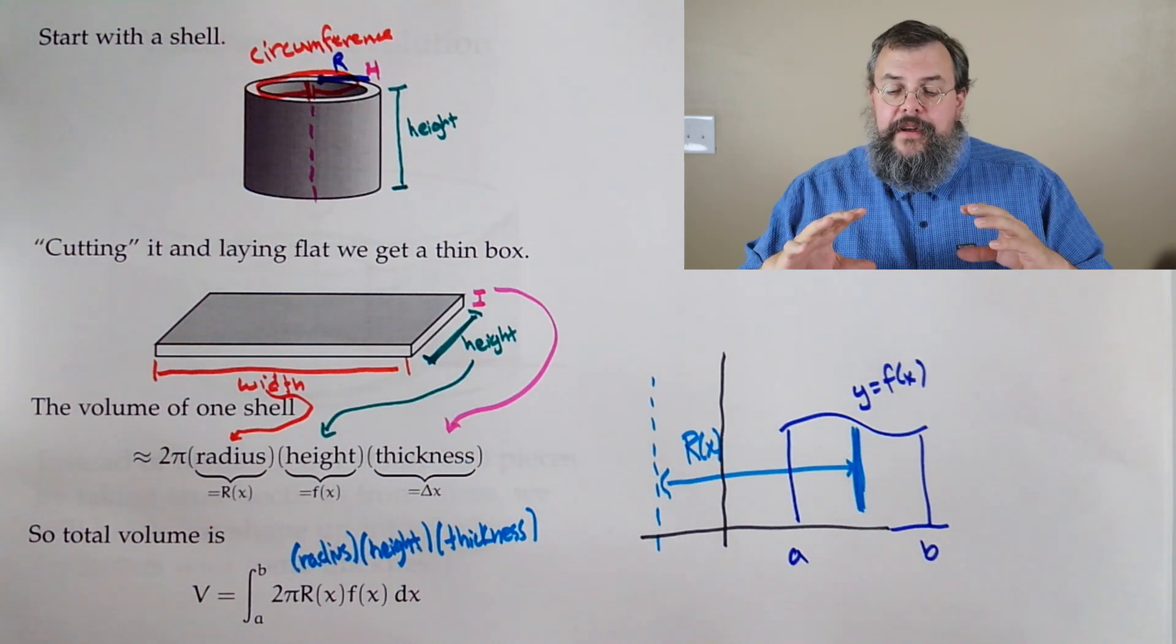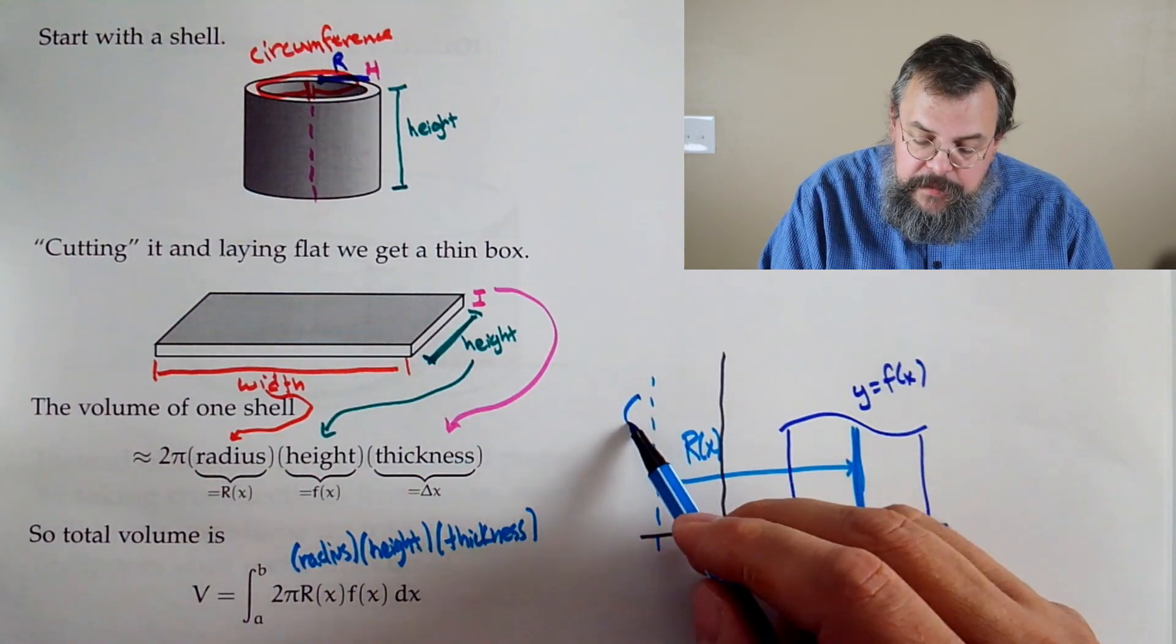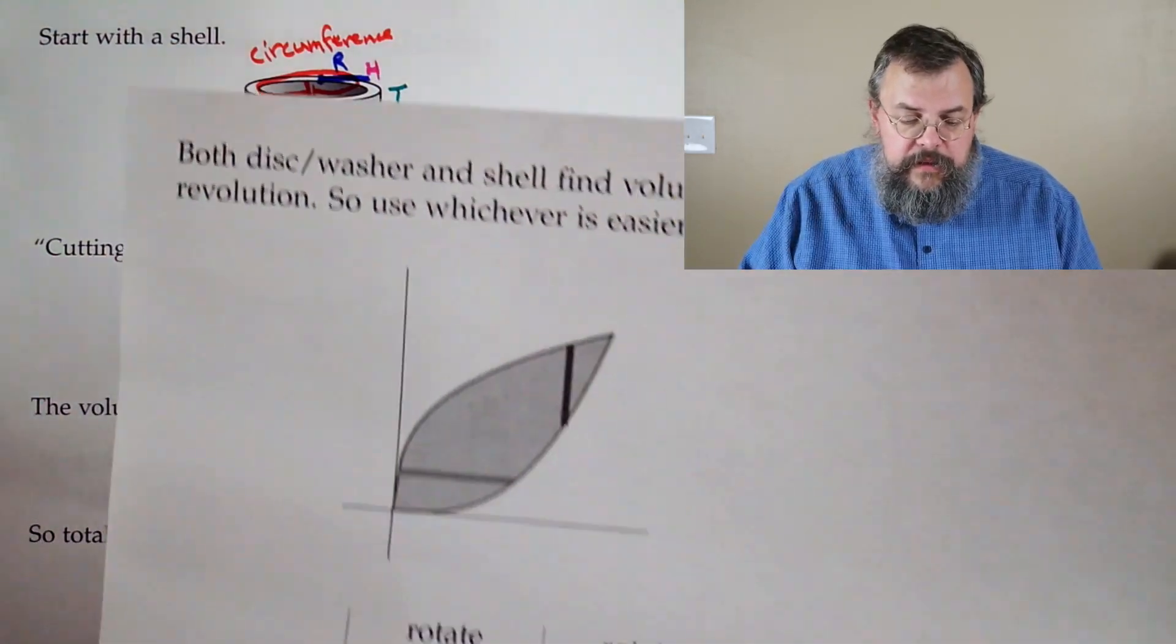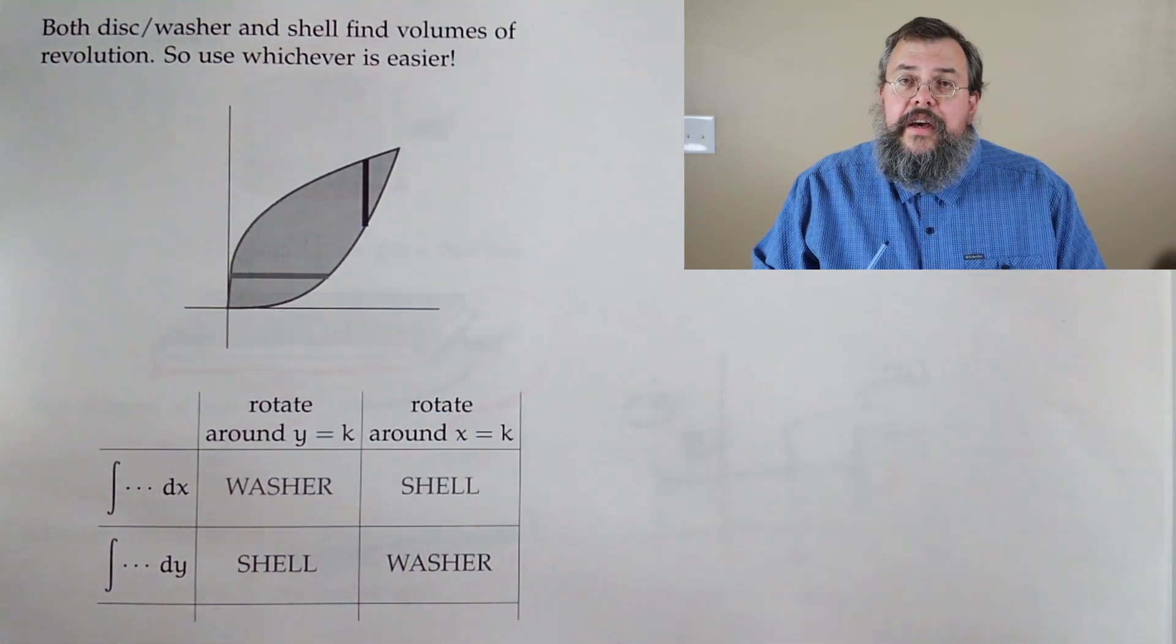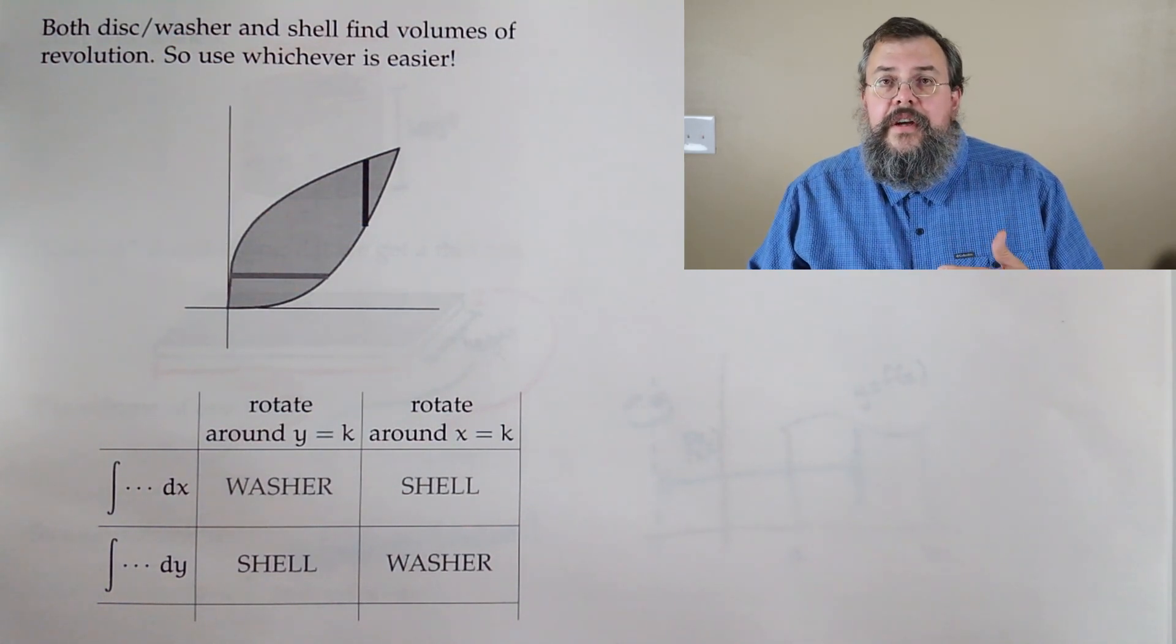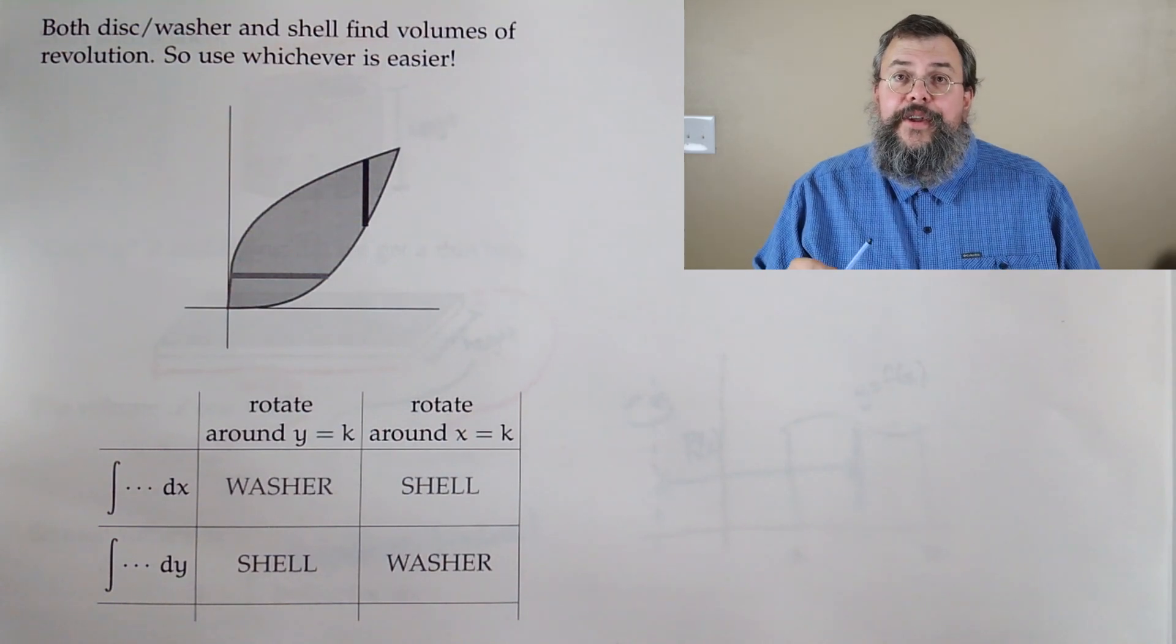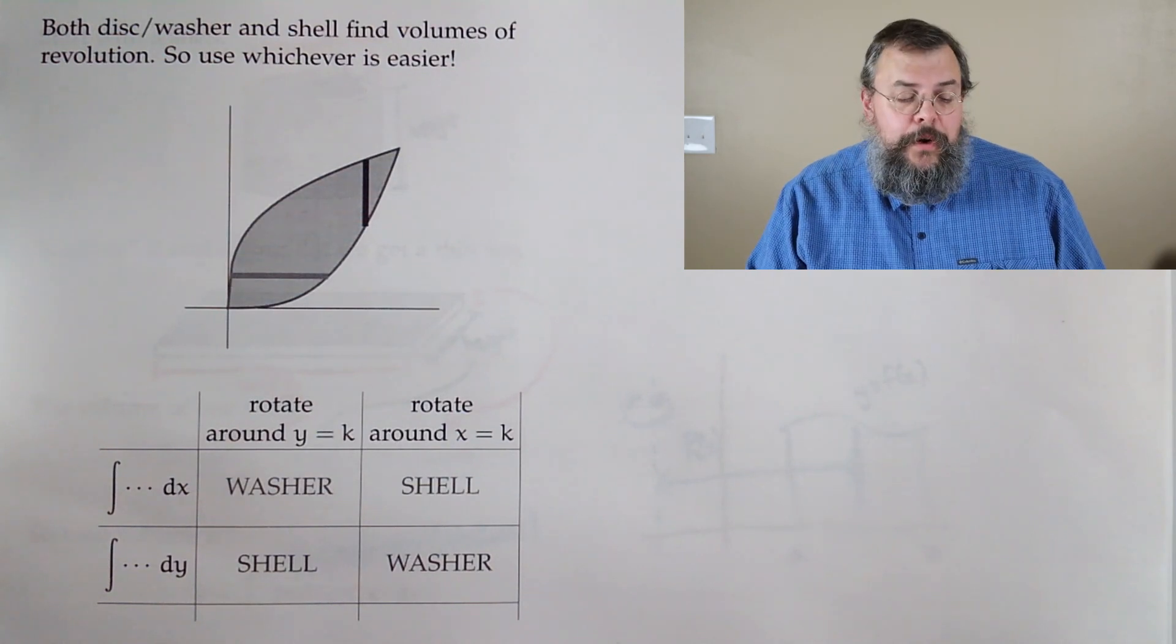So we've now talked about finding a volume of revolution in two different ways. So the question becomes, what do we do with these two different versions? And so the answer is, you use whichever one is best. In certain settings, you'll see that some applications are easier done if you use the washer method. In other applications, it's easier if you use the shell method. Sometimes you don't have a choice. And occasionally, this is where things get fun, you can use either.